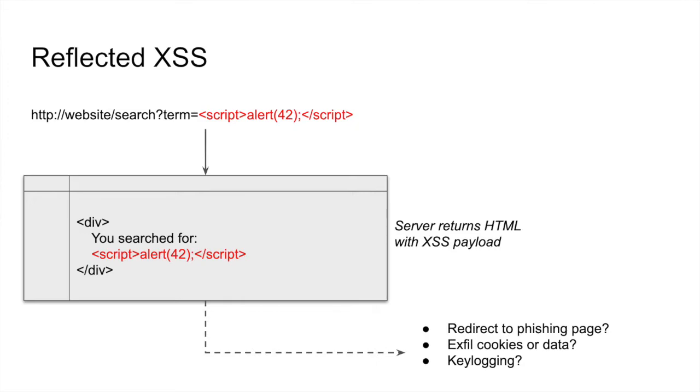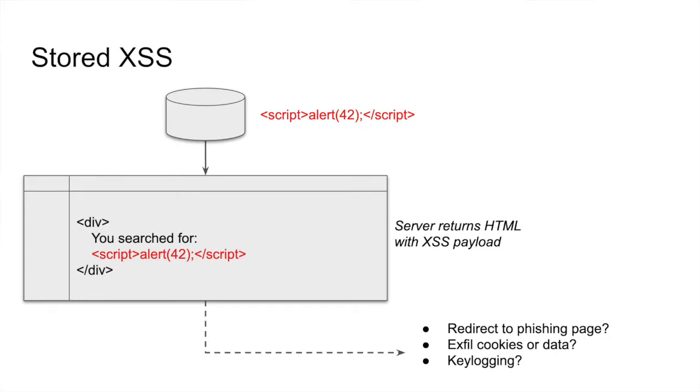It could redirect us to a phishing page, it could inspect our cookies or our local data, or it could even log the keys that we type on the page and send those back to the attacker. In a reflected cross-site scripting attack, the attack gets its name like a mirror — it's reflecting the input the application is given back to the user as part of the HTML.